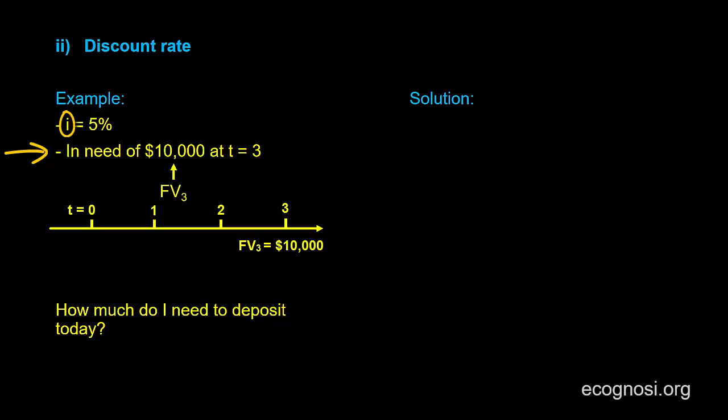So how much do I need to deposit today at the 5% interest rate in order for that amount to grow to $10,000 in 3 years?